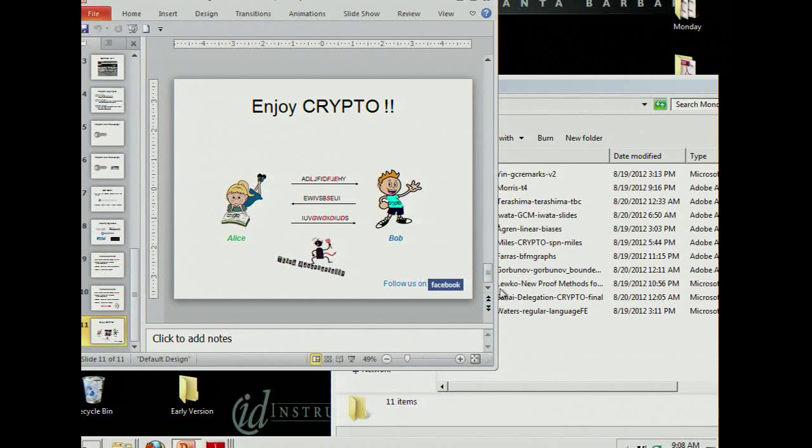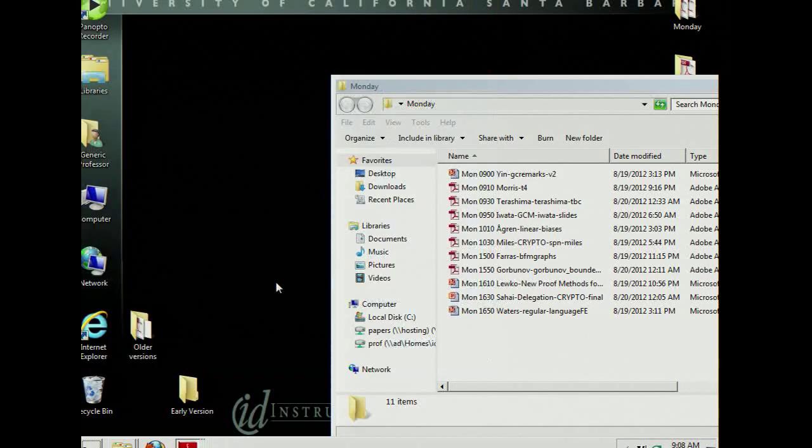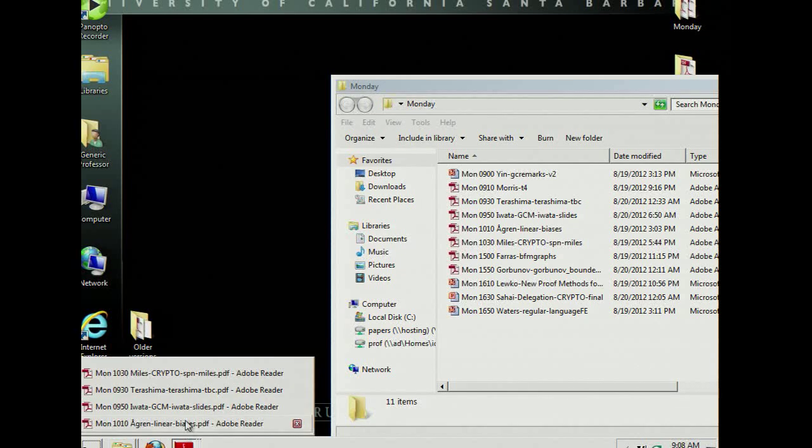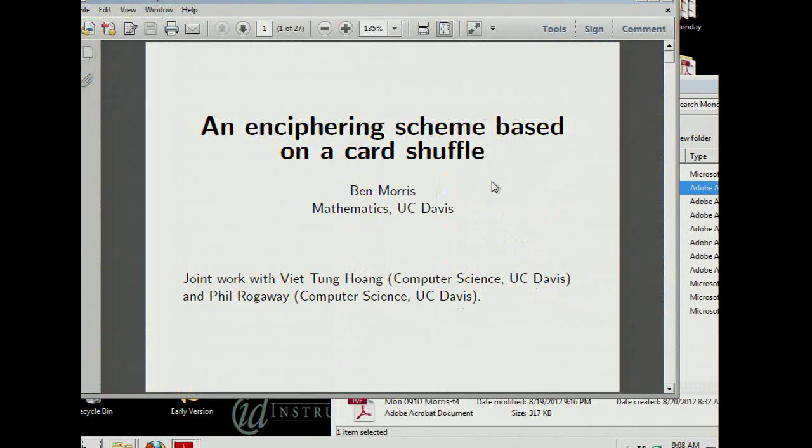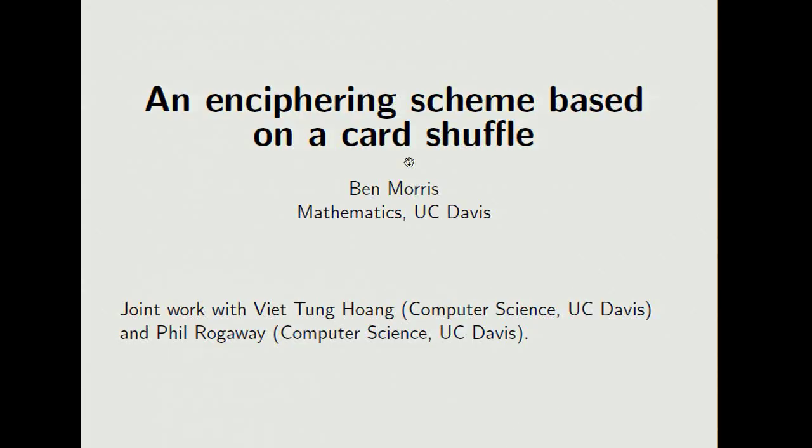Good morning everybody and welcome to the first session of Crypto. My name is Bart Prunel and I have the pleasure to share this session. We have five talks on symmetric cryptosystems and the first talk is entitled An Encyphering Scheme Based on a Card Shuffle by Viet Tong Huang, Ben Morris and Phil Roggeway. Ben will give the talk.